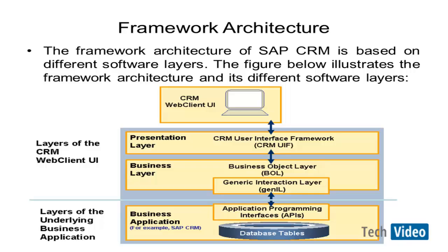When we talk about the framework architecture, this diagram represents it. As you can see, the GenIL layer is in between the business object layer, BOL in short, and the API layer. As per the terminology, we talk about three different layers: the presentation layer, the business layer, and the business application layer.